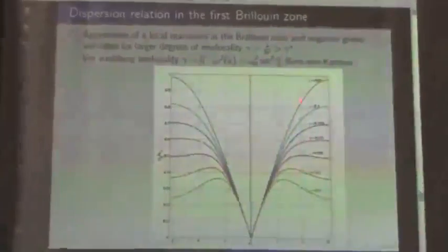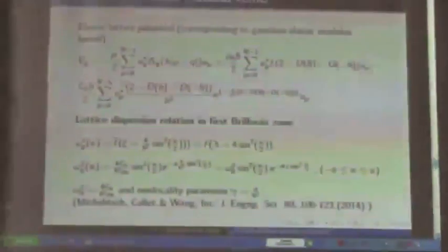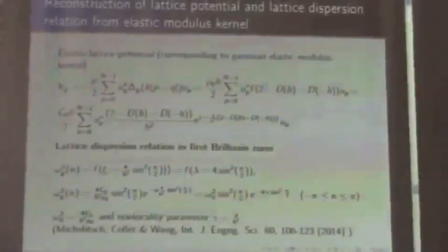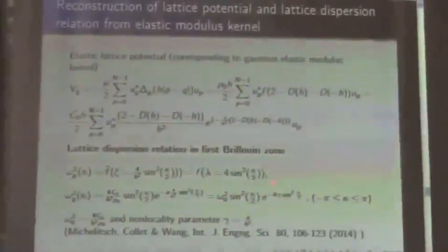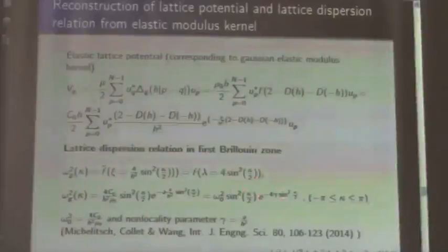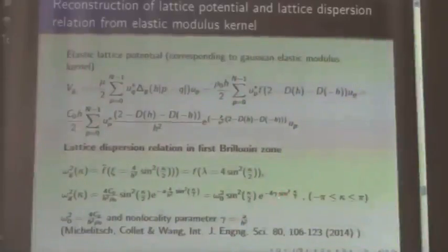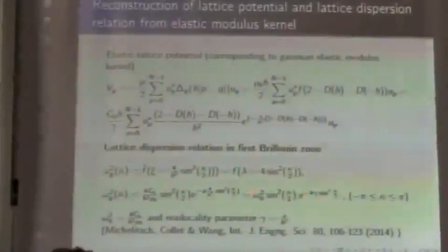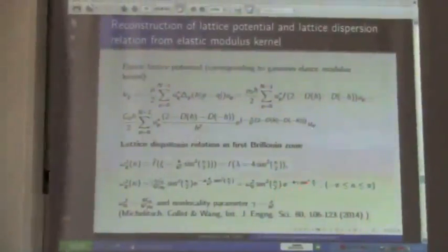An important thing I should mention: the first order of the dispersion relation always corresponds to the next-neighbor Born–von Kármán chain, and the rest is what makes the non-locality. We can introduce higher orders which sum up, so M equal to 1 is here, and the higher orders give rise to a factor which we can characterize as a non-locality. When the non-locality parameter gamma is equal to zero, we have local Born–von Kármán next-neighbor chain behavior. If we switch on the non-locality, we have this modified dispersion relation.